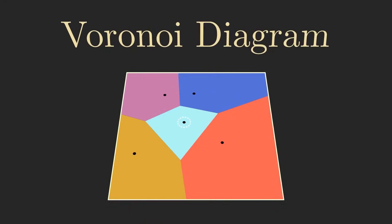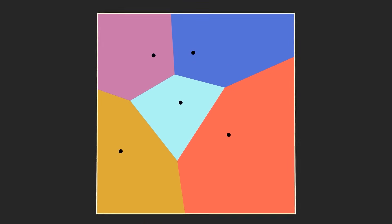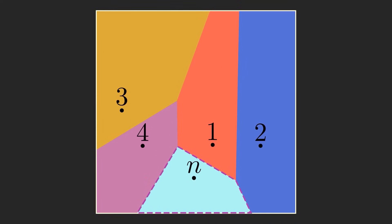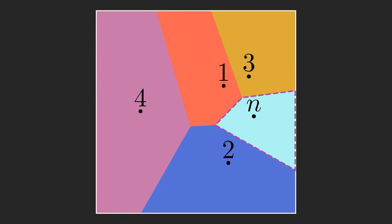This is called a Voronoi diagram. My question is, in a Voronoi diagram with n random sites, what is the average perimeter of a random cell in terms of n?